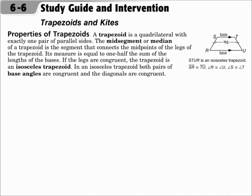A trapezoid is a quadrilateral with exactly one pair of parallel sides. The mid-segment, or median of a trapezoid, is the segment that connects the midpoints of the legs. Its measure is half the sum of the bases.